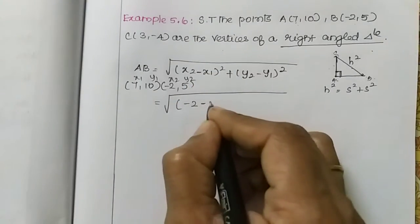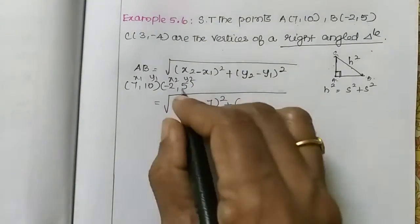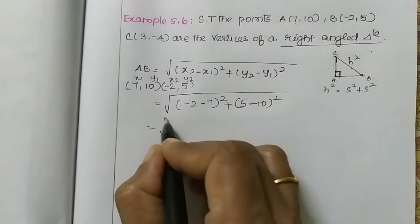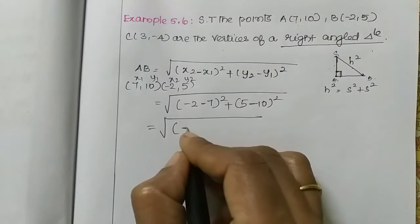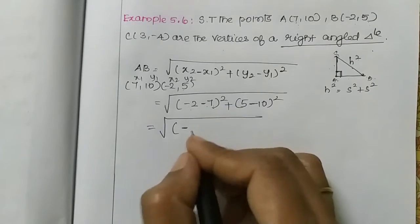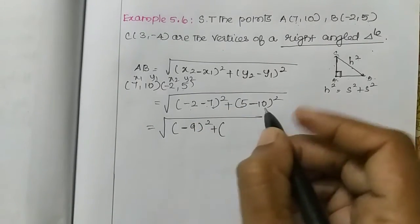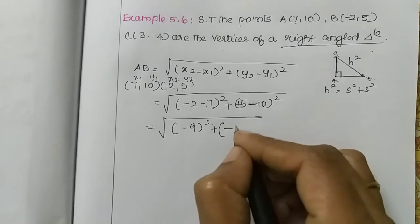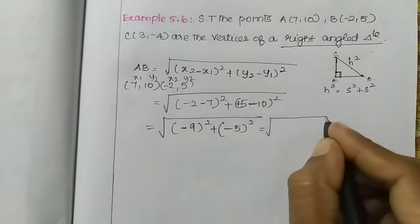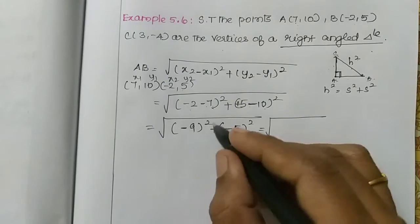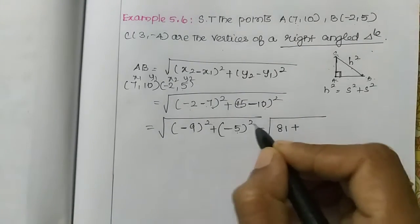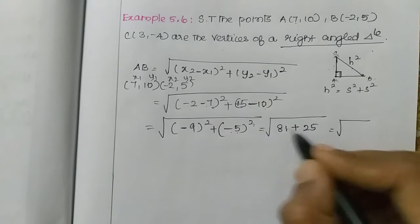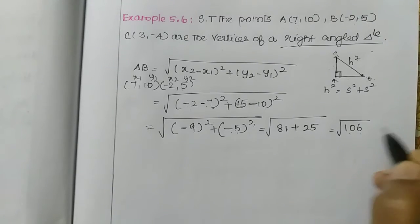Substituting: root of (-2 minus 7) whole square plus (5 minus 10) whole square. That gives root of (-9) whole square plus (-5) whole square. Since minus squared is positive: 9 squared is 81, plus 5 squared is 25. So AB = root of 106.